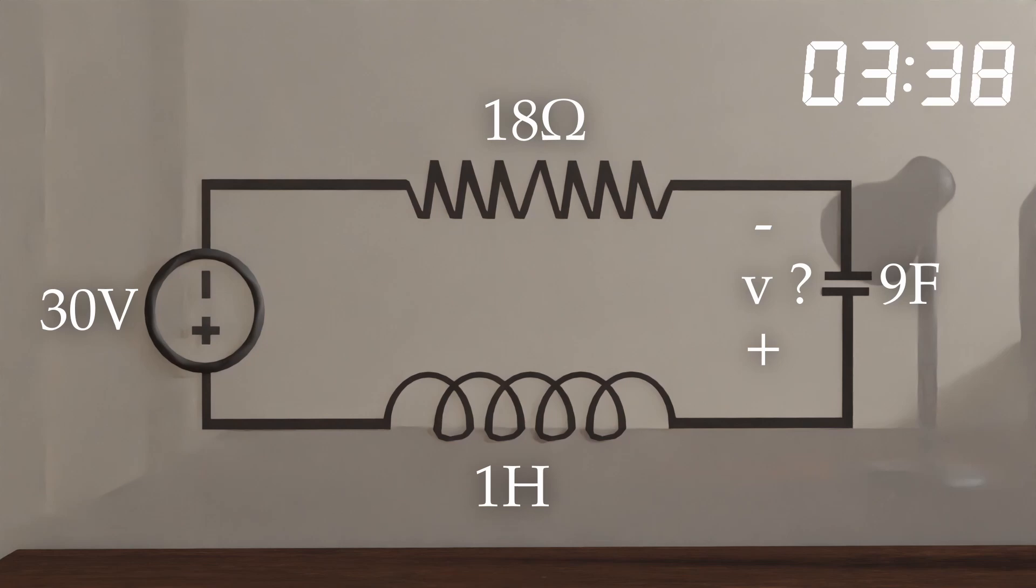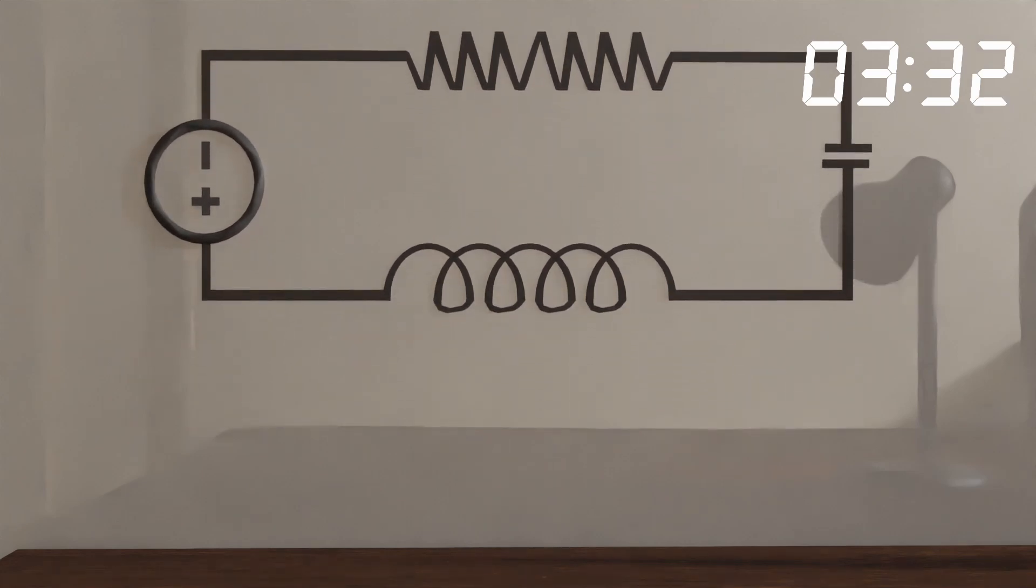And for the capacitor, well, that's what we're trying to solve, so let's call it v. Then by the voltage law, we get this differential equation. Now we're done. All we have to do is just solve it.